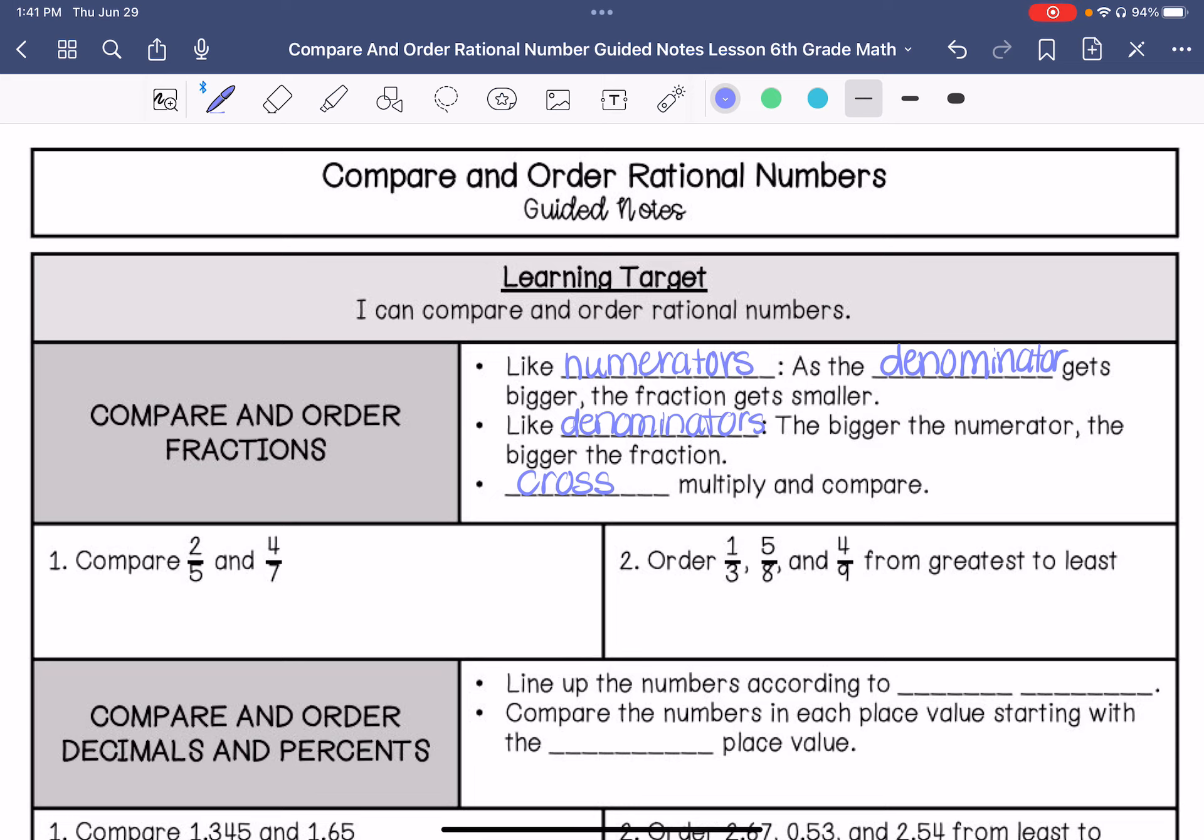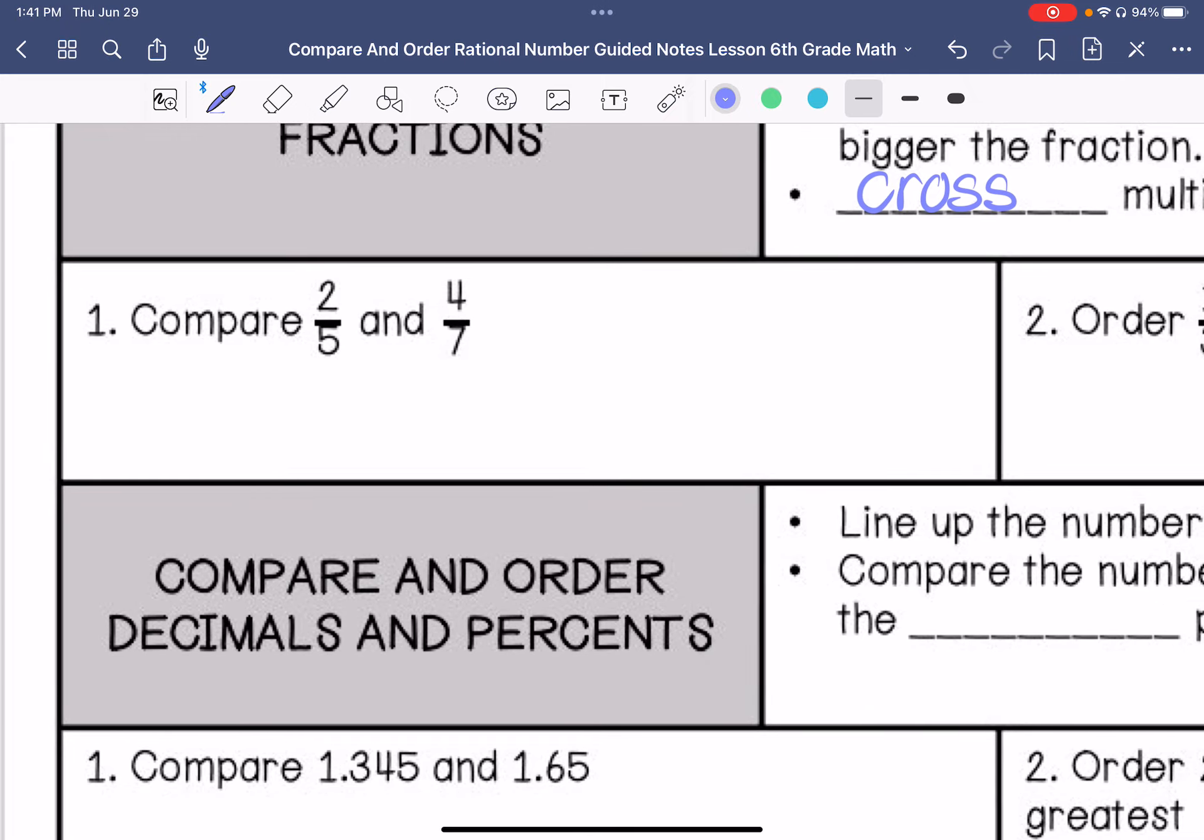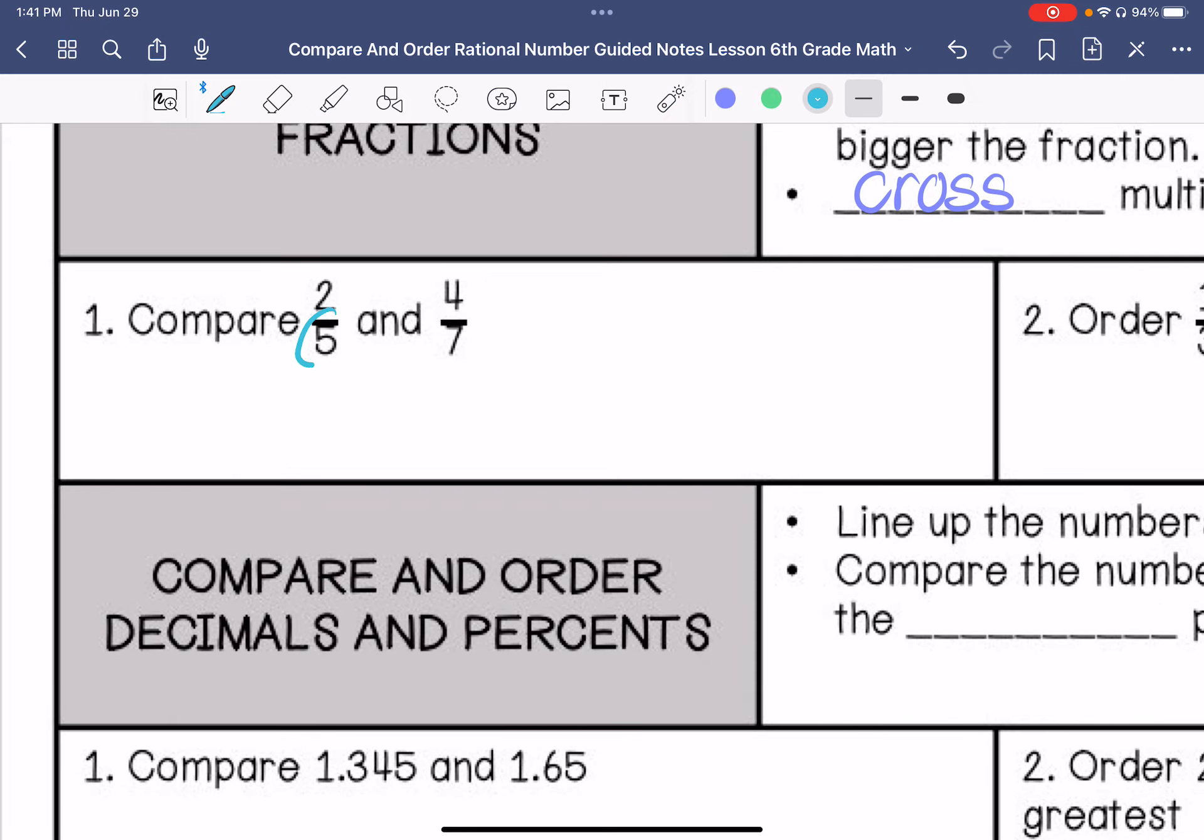Alright, we are going to compare these two. I'm going to cross multiply, this is 20, cross multiply, this is 14, so that means that four-sevenths is greater than two-fifths.